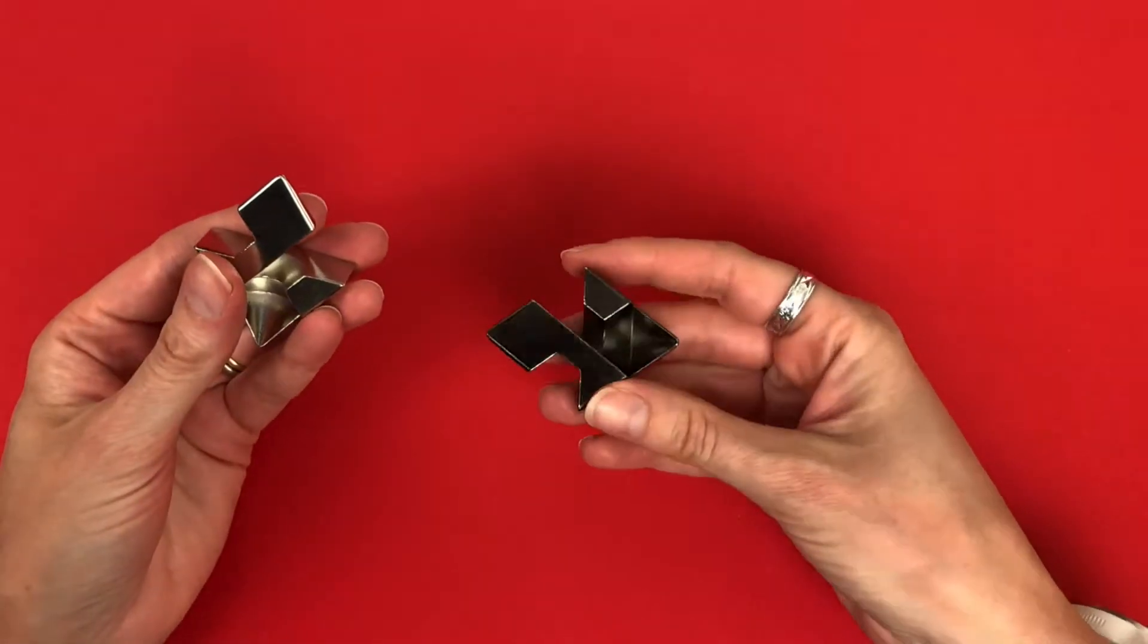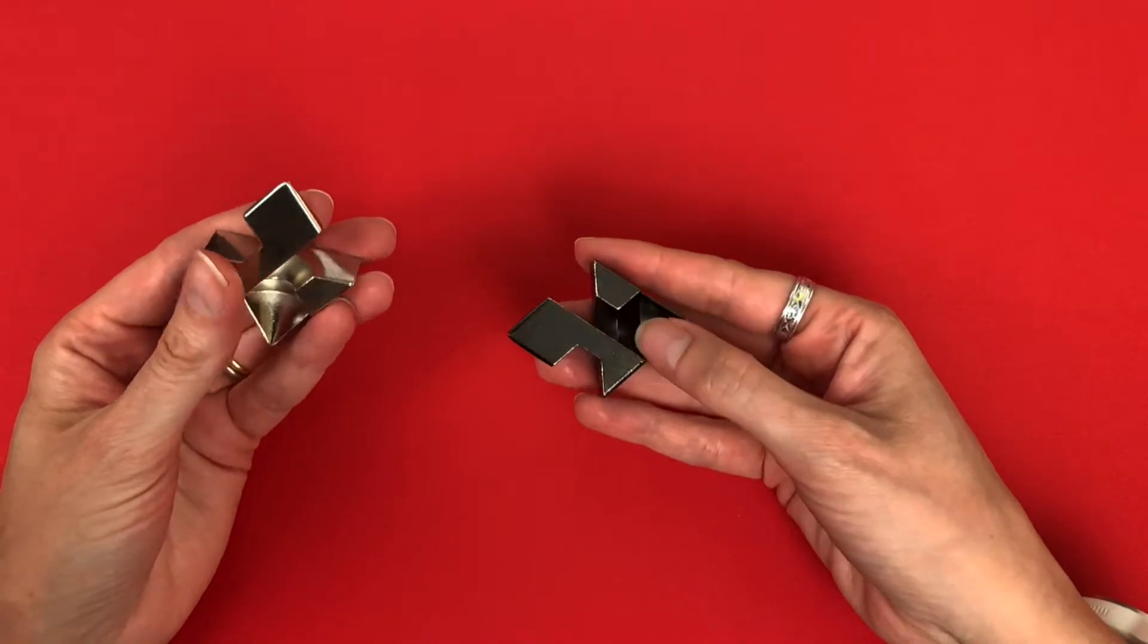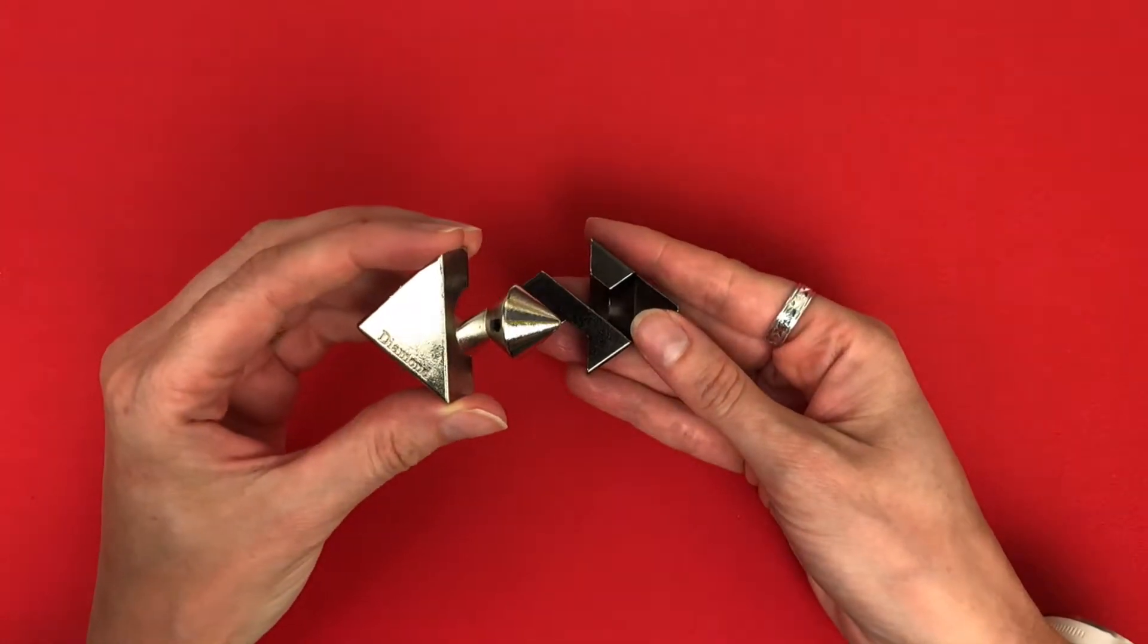So the first step is to hold the pieces like this so you've got one piece with the hollow part here and the other piece hold it in your hand like that.